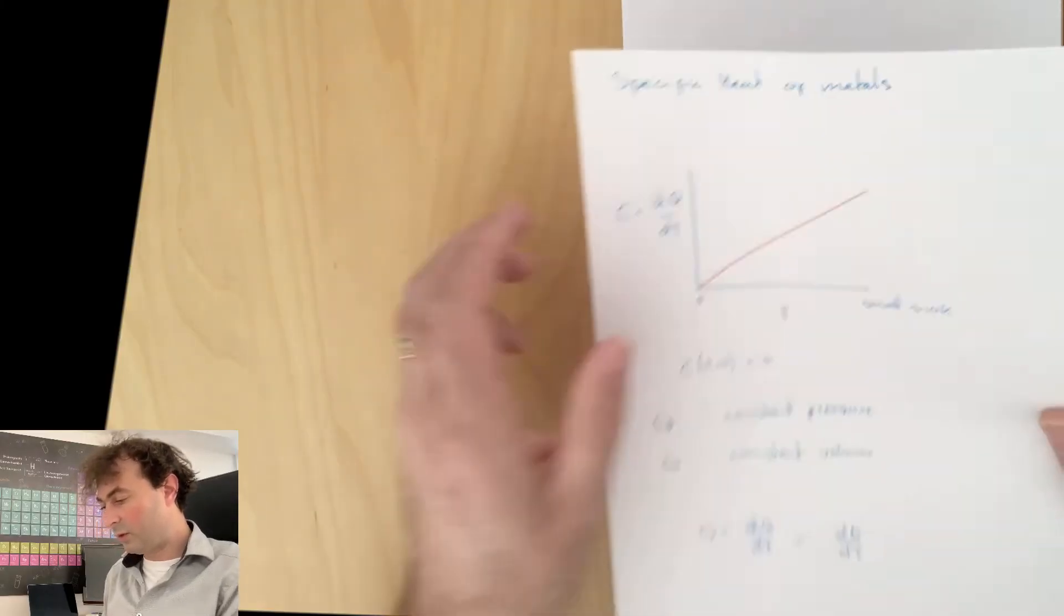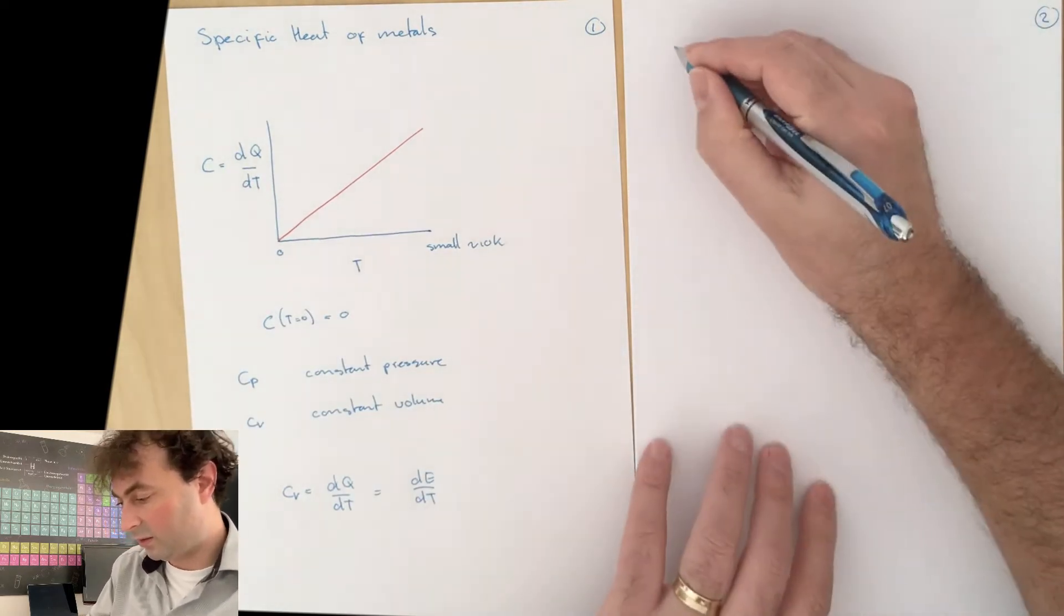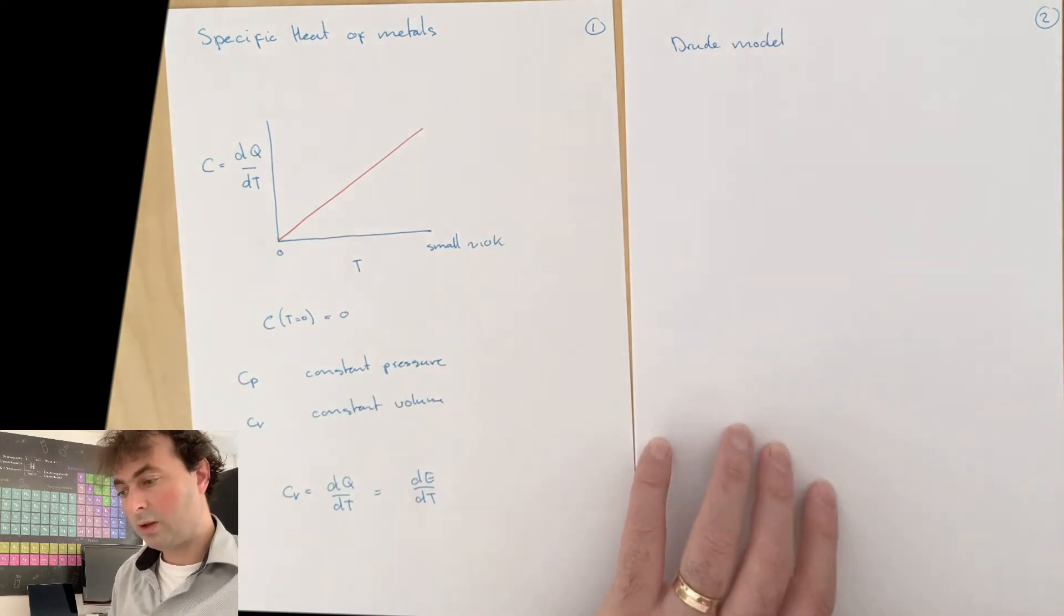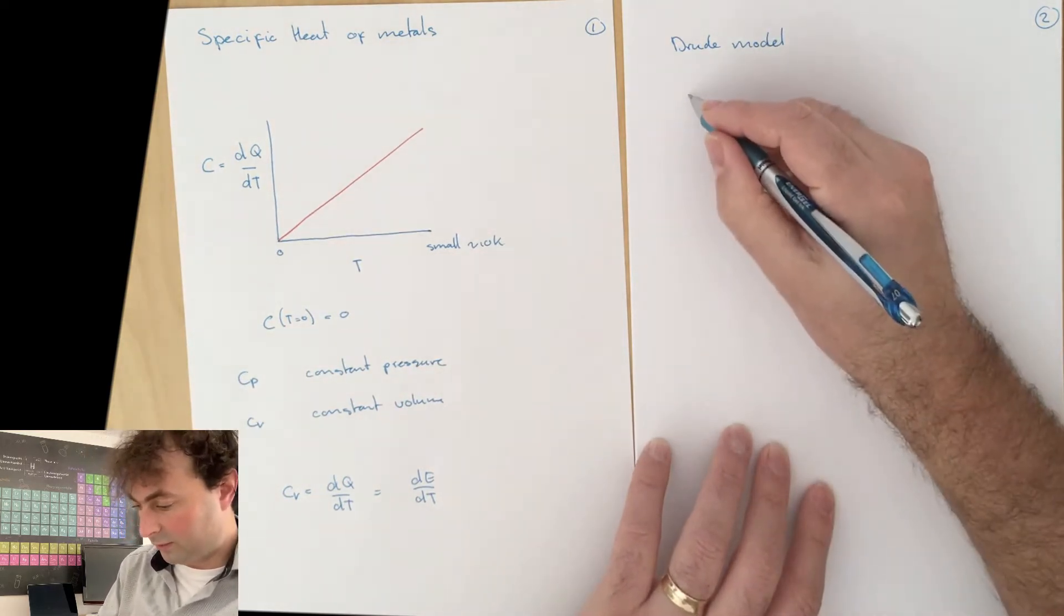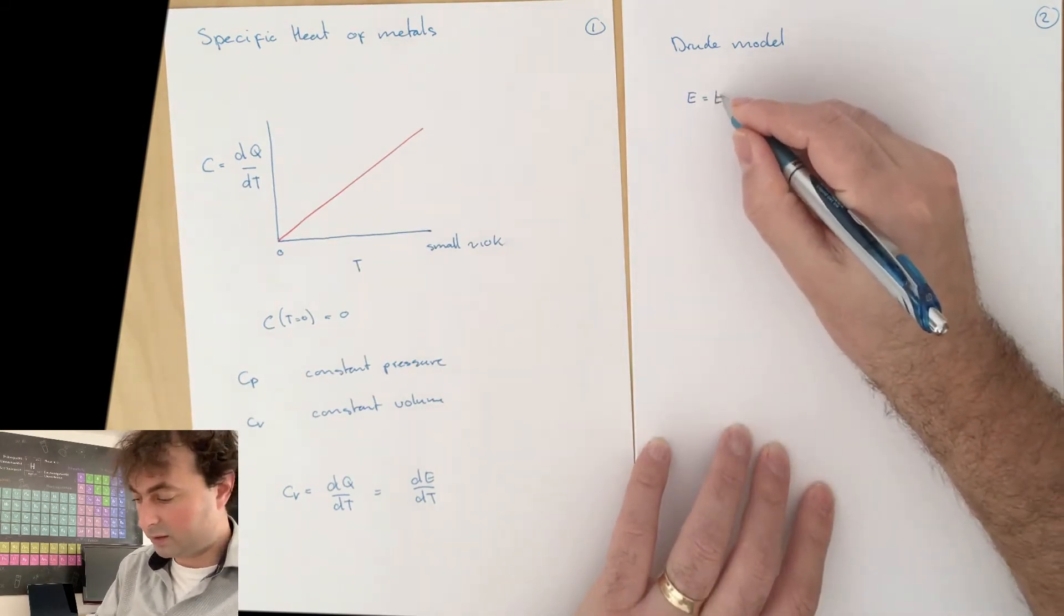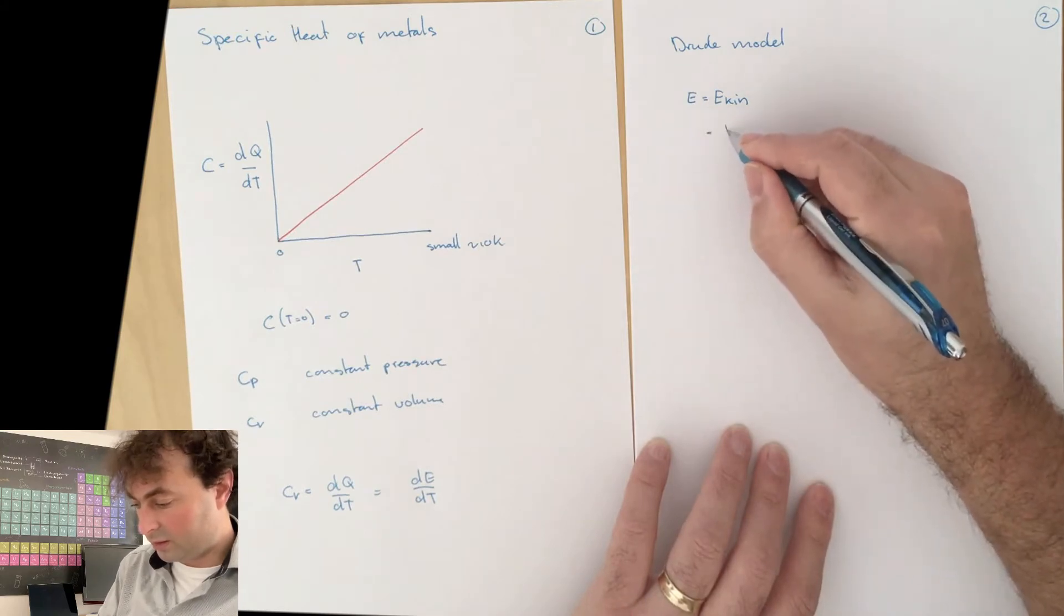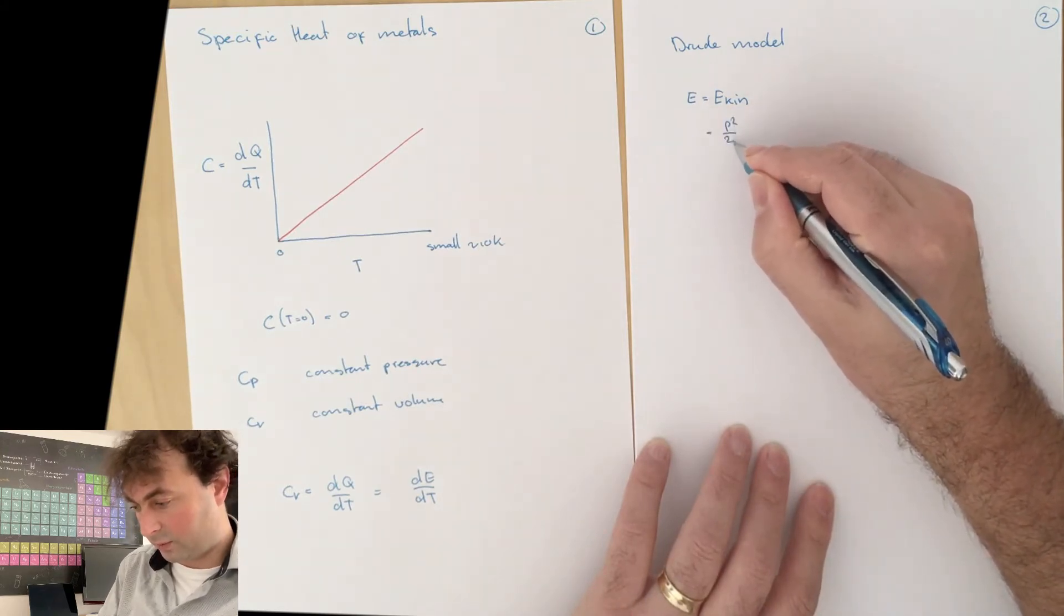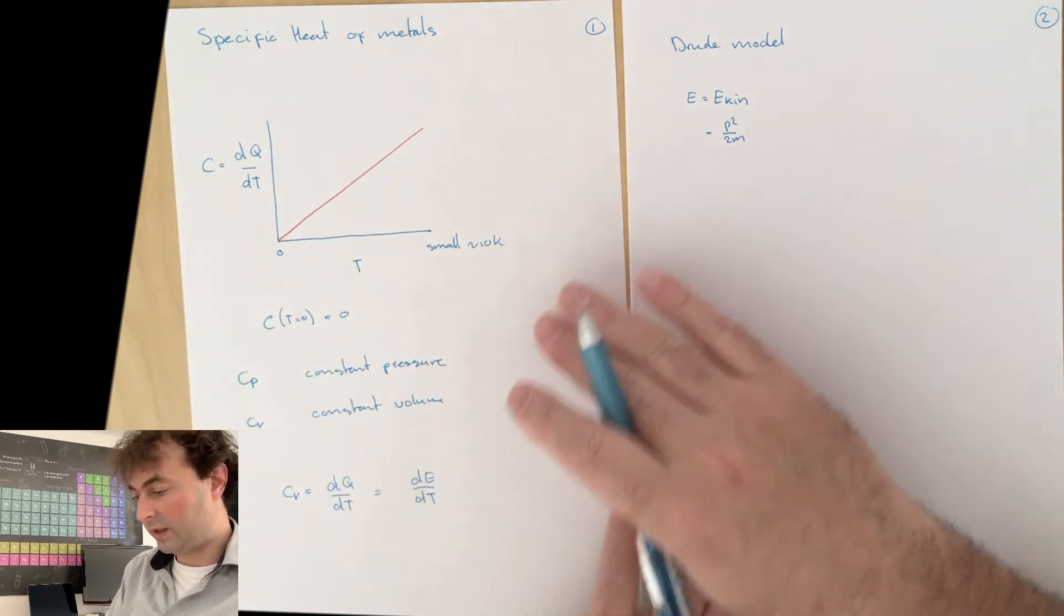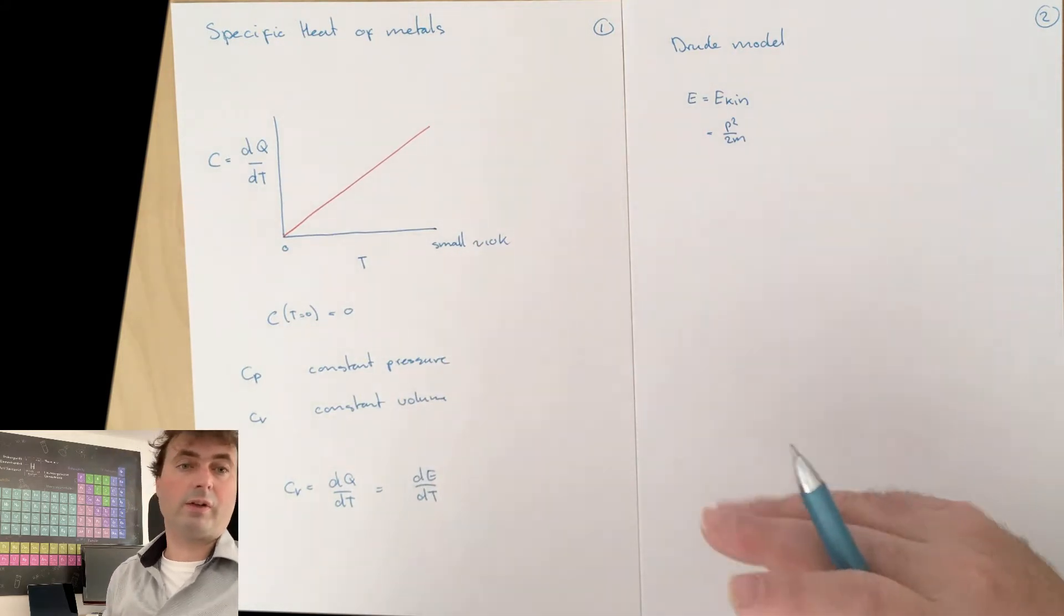Let's have a look at the results that we expect in the Drude model. In the Drude model we know that our energy is given by the kinetic energy, and the kinetic energy is p squared over 2m.